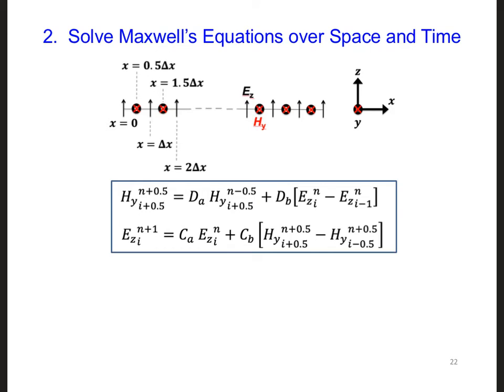For the second section of our code, we want to solve for future values of the electric and magnetic fields across the grid at each time step. We can do this by solving in a leapfrog fashion the two update equations that we derived earlier. Here are the two update equations.